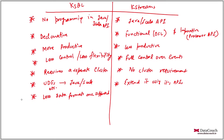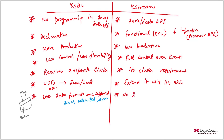In a Kafka message we have two things: a key and a value. The key is always a string, but when talking about data formats we are referring to value formats. There are three value formats supported in KSQL: delimited, JSON, and Avro. In KStreams there is no such limitation on data formats.